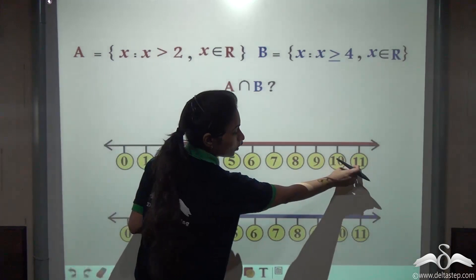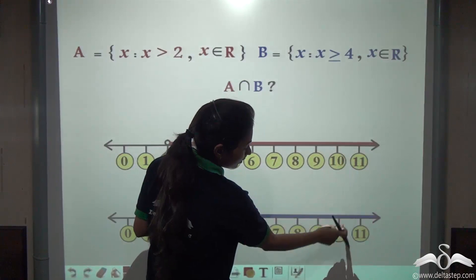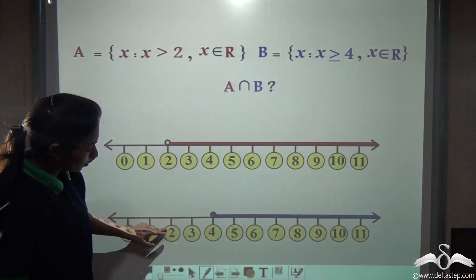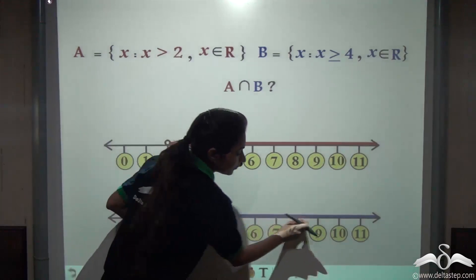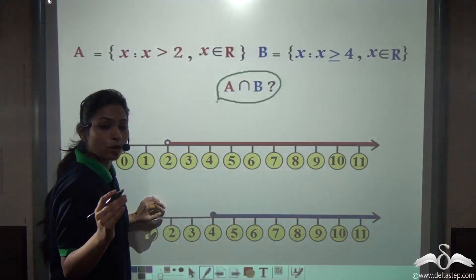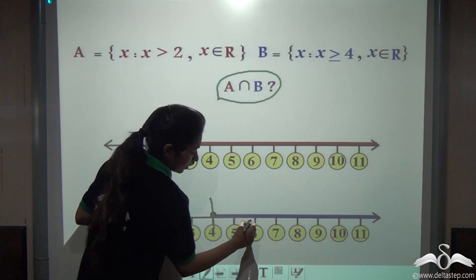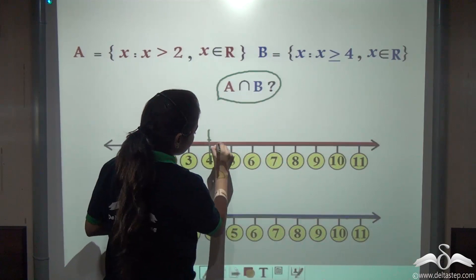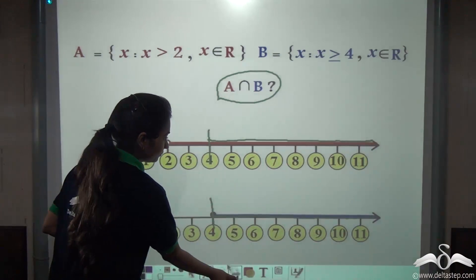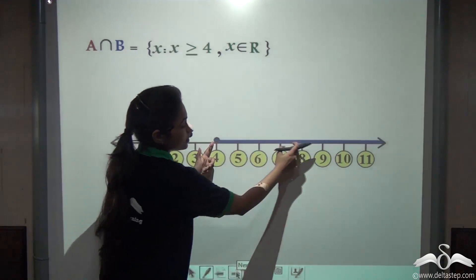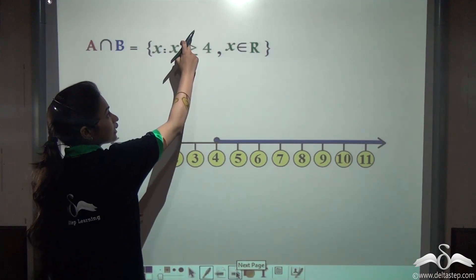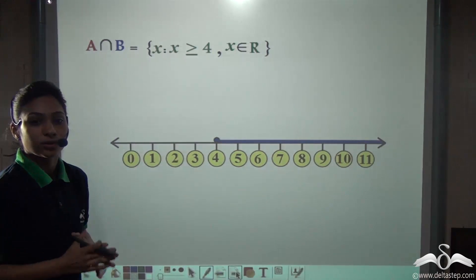Look at A intersection B. Look at A and look at B. You need to find those numbers common to both. Look at some random numbers: 11, 10, 9, 8, 7, 6, 5, 4 — these are common in both. But 3 and 2 are not common in both, and the numbers in between are also common. So A intersection B can be plotted on the number line as only this part, starting from 4 with a filled circle, because x is greater than or equal to 4 is present in both sets.